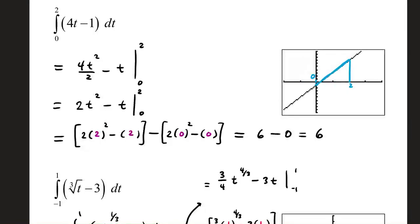Welcome. We're going to look at some definite integrals, where we're going to take this first integral. It's the integral from 0 to 2 of the function 4t minus 1. Graphing is not required.